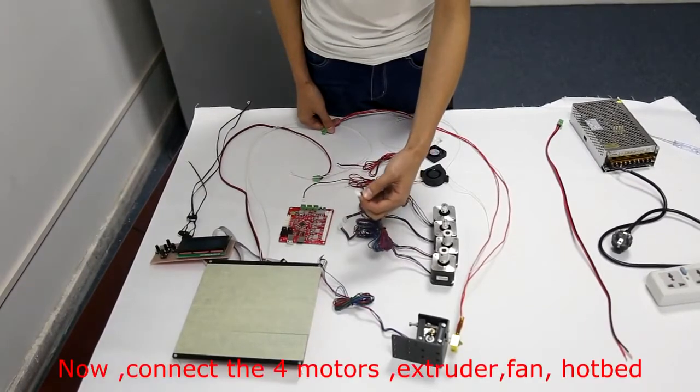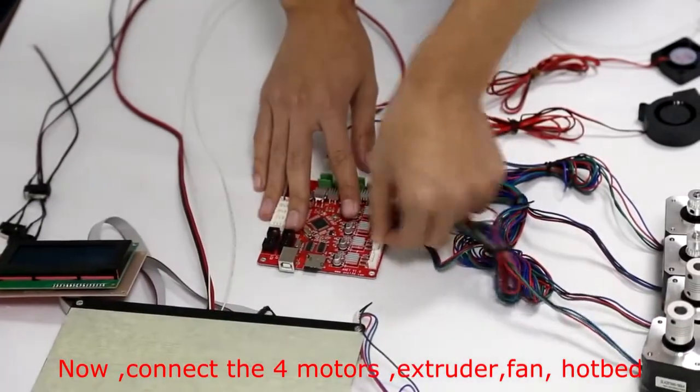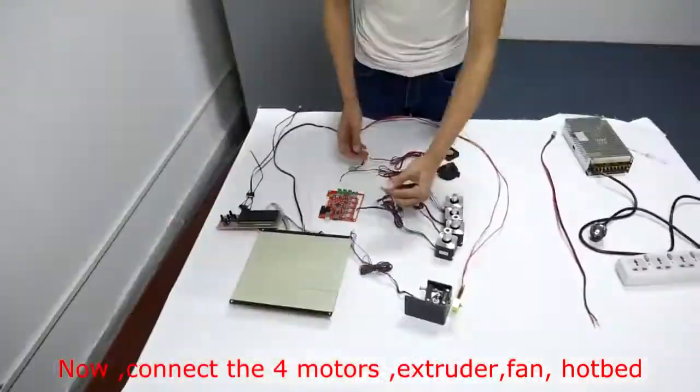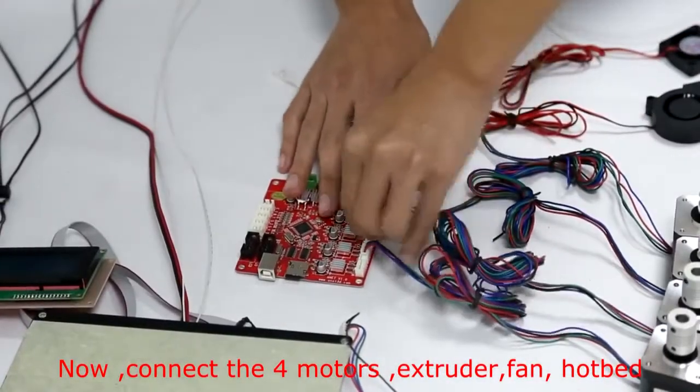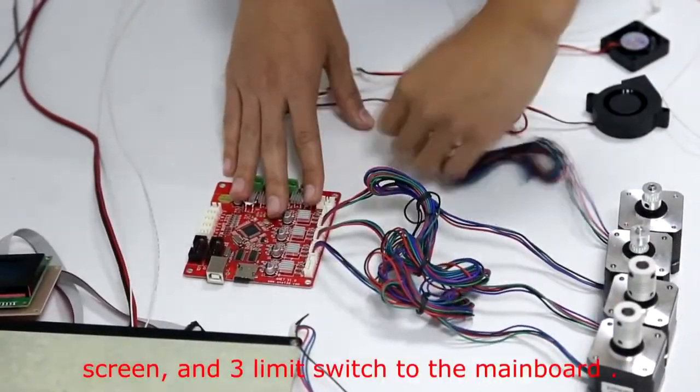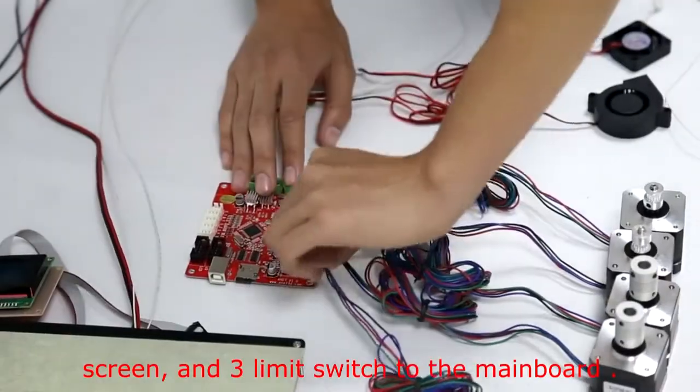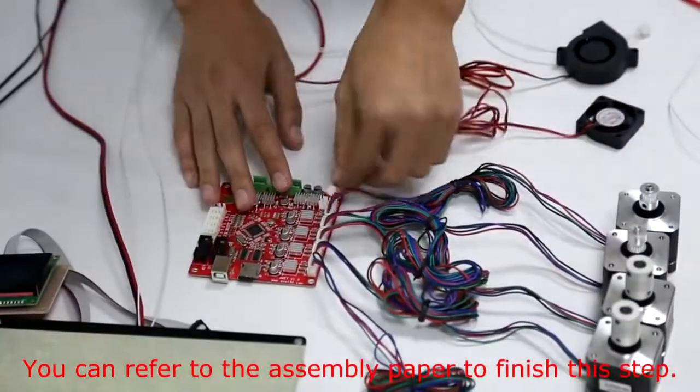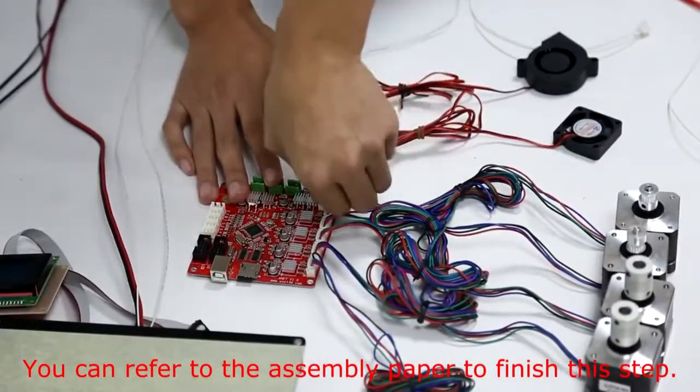Now connect the four motors, extruder, fan, hotbed, screen, and three limit switches to the mainboard. You can refer to the assembly paper to finish this step.